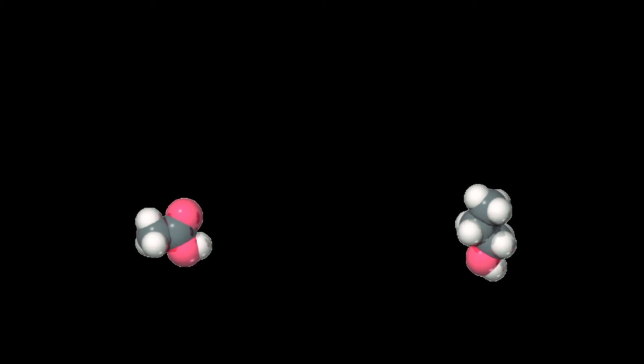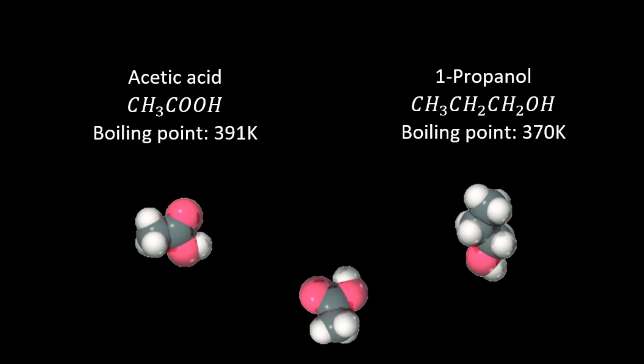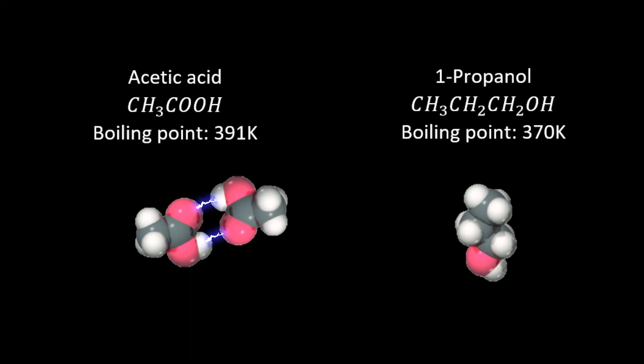Hydrogen bonds are often formed with molecules that have OH or NH groups, such as acetic acid and 1-propanol. They have identical molecular weights, and the boiling points of each are shown. Acetic acid has a higher boiling point because it is able to form two hydrogen bonds with each neighboring atom. 1-propanol has a lower boiling point because it can only form one hydrogen bond with neighboring atoms.